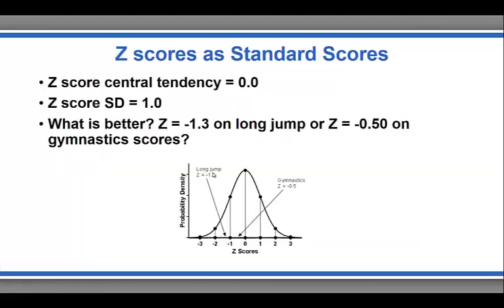Finally, we can use z-scores as standard scores to compare measurements that exist on different scales. For example, if we wanted to compare someone's long jump performance versus their score on a gymnastics rating scale: the subject scored negative 1.3 as a z-score on the long jump and negative 0.5 on the gymnastics score. This person is better at gymnastics because they're closer to the mean — the long jump score is 1.3 standard deviations below the mean, while the gymnastics score is only half a standard deviation below the mean.